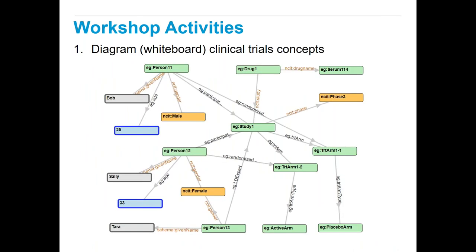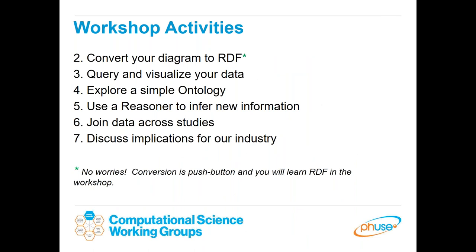In terms of workshop activities, you will first diagram the relationships in your own personal clinical trial. You'll be assigned a study and develop a whiteboard graph linking concepts together for a small clinical study. You will then convert your diagram to RDF — it's just a click of a button to export the diagram to RDF. You will use that data for querying and visualizing, and explore a simple ontology with a reasoner to infer new information. As a final step, you'll join data across all the studies in the workshop — 20-some attendees — pulling all data together with a simple query almost instantaneously.